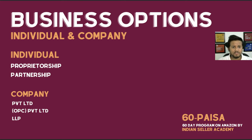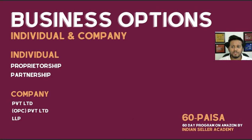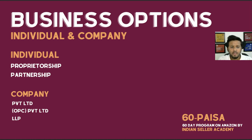In terms of business options for setting up your company, we have two broad categories. The first is an individual business, where options are proprietorship or a partnership firm. The second broad category is a company, with options including private limited, OPC (one person private limited company), and LLP (limited liability partnership).